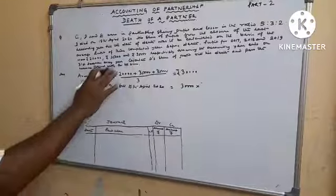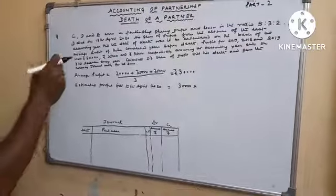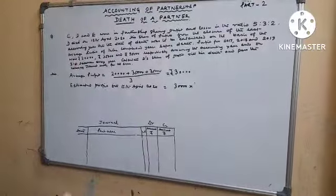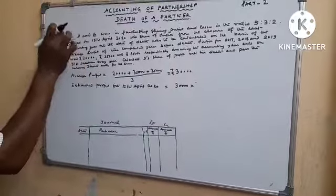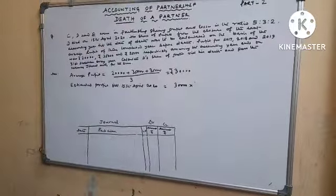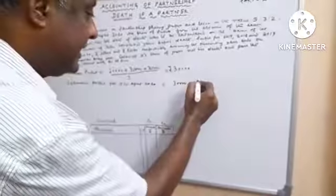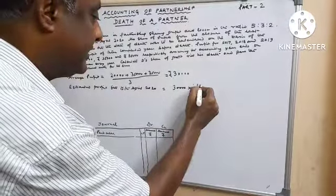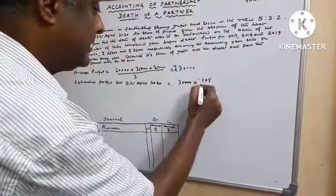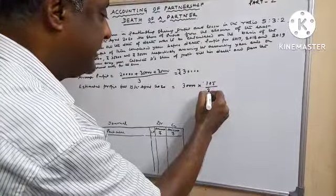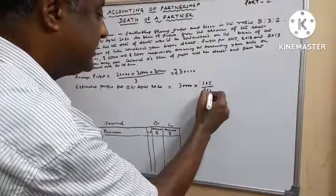Now, accounting year ends on which date? Accounting year ends every year on 31st December. From 1st January to 15th April, how many days are there? 105 days are there, divided by total number of days in a year, which is 365.